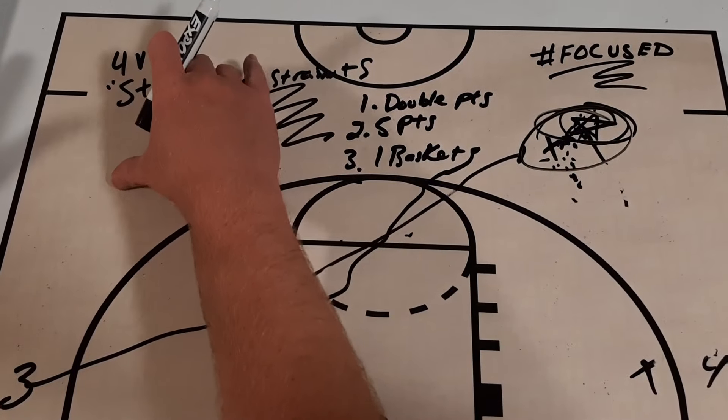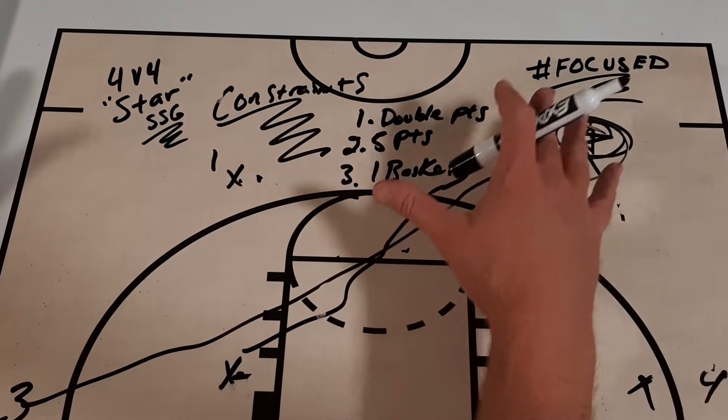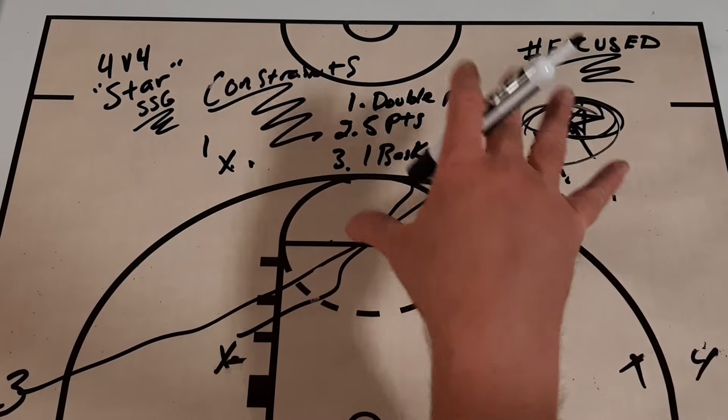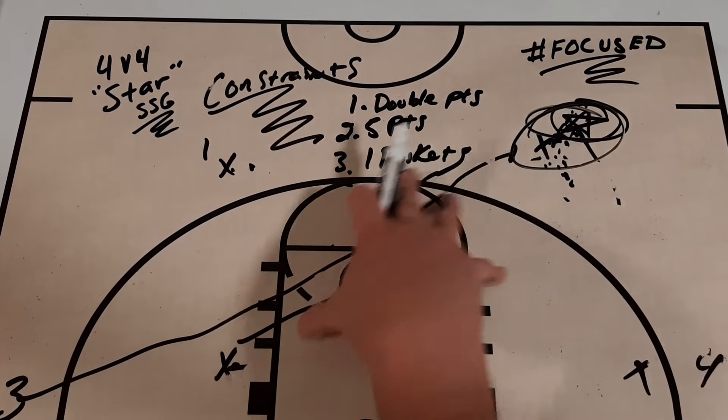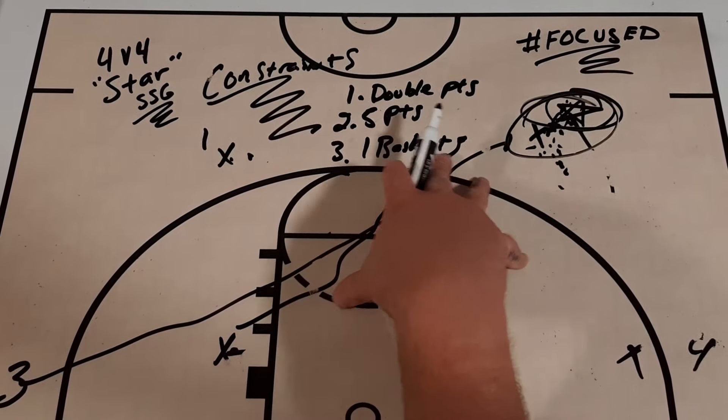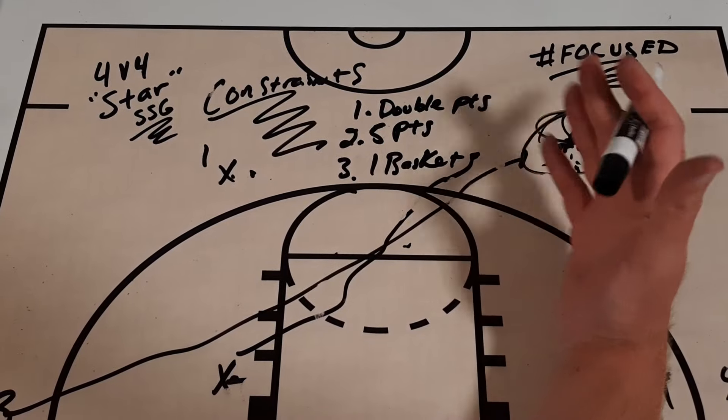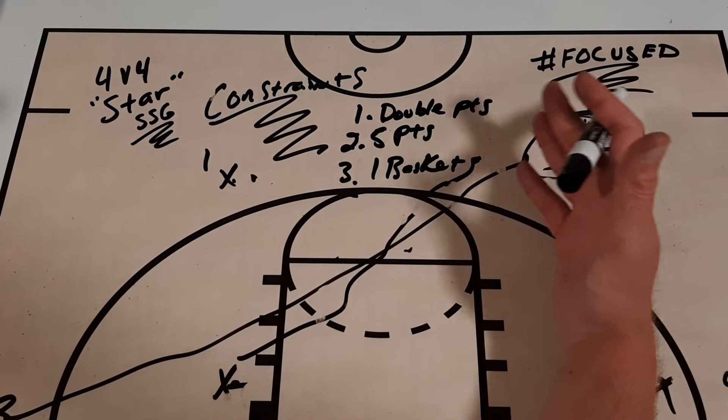Of course, you can do it without the star qualities and make it like a four-versus-four shell drill. But this was great for us. I get a lot of questions from coaches. What do you do? Do you automatically go to a box-in-one or a triangle-and-two when teams have stud players? Maybe, if that's something you like to do.